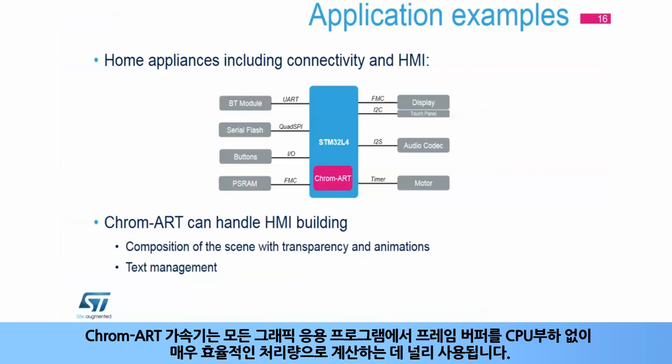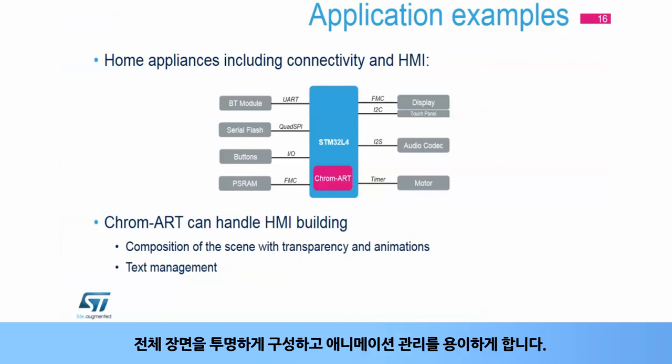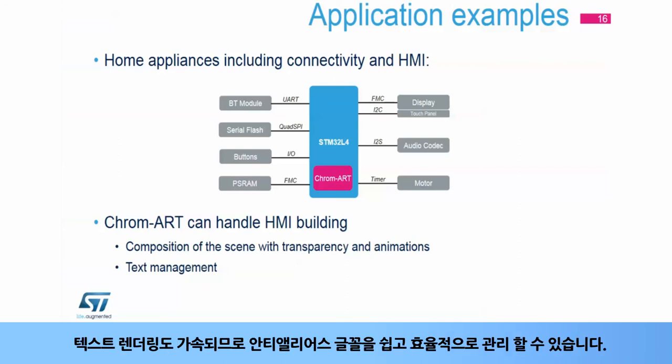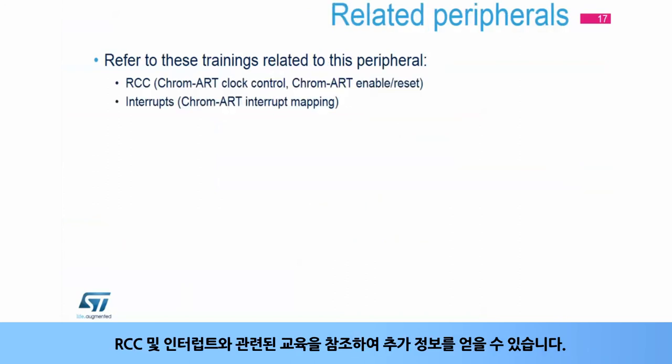The Chrom-ART Accelerator is widely used in any graphical application to compute the frame buffer without any CPU load and with a very efficient throughput. It can compose the whole scene with transparency and facilitate the management of animations. Text rendering is also accelerated, making it easy and efficient to manage anti-aliased fonts. You can refer to the trainings related to the RCC and interrupts for additional information.